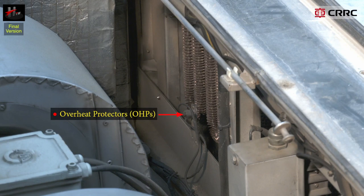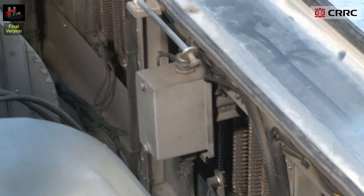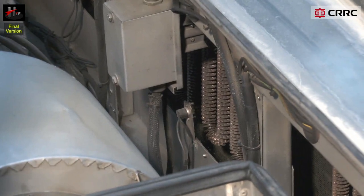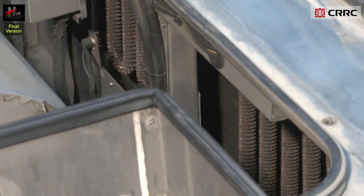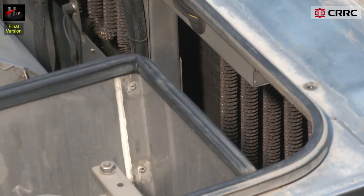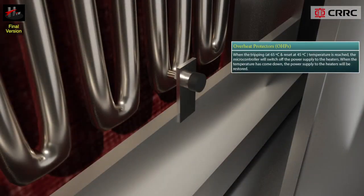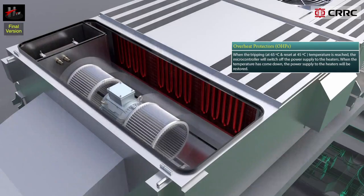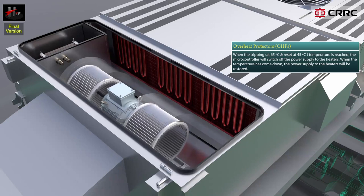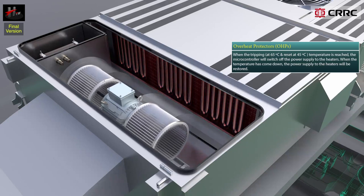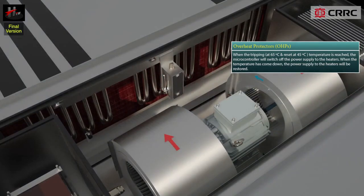The overheat protectors or OHPs are an arrangement of three auto-resetting temperature switches connected in series, installed on the downstream side of the heater bank. When the tripping temperature of 65 degrees centigrade is reached, the microcontroller switches off the power supply to the heaters. When the temperature has come down, the power supply to the heaters will be restored.